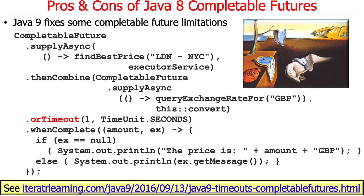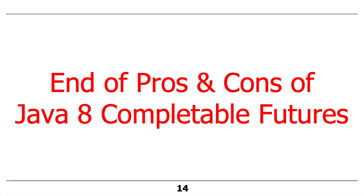It's a nice small feature to make life ever so much better. That actually completes the discussion about completable futures, which leads us to the end of our discussion on all the different parallel processing mechanisms available in Java.